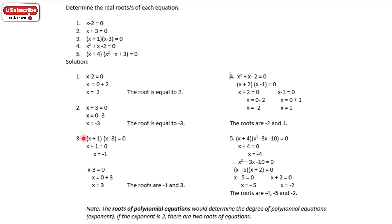For number 3, x plus 1 times x plus 3. Separate them: x plus 1 equals 0, transpose, x is equal to negative 1. Then x minus 3 equals 0, transpose, x is equal to positive 3.